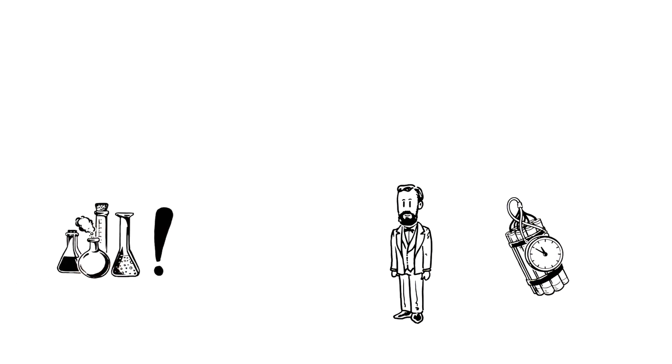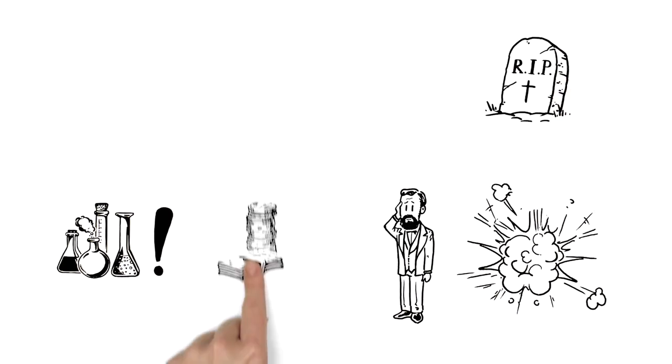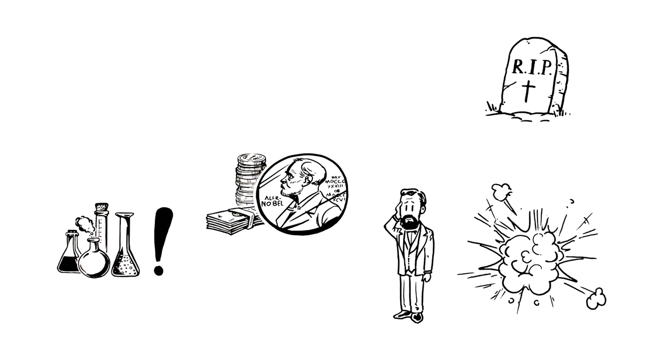However, having mostly invented explosives, he worried about how people would remember him. So when he died, he left most of his wealth in a trust to fund what would later be known as the Nobel Prizes.